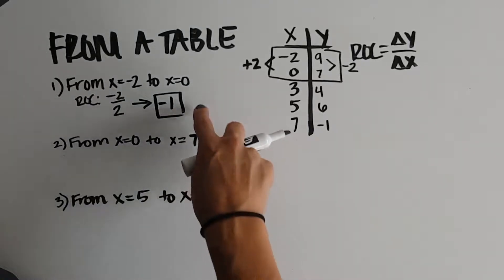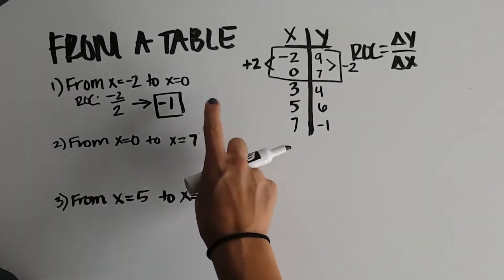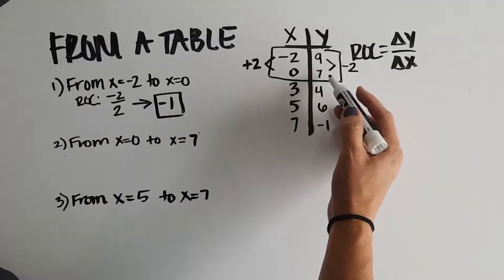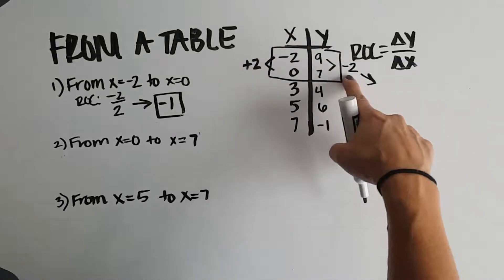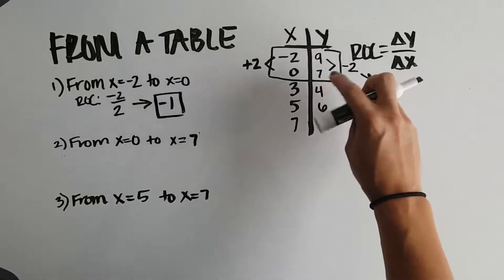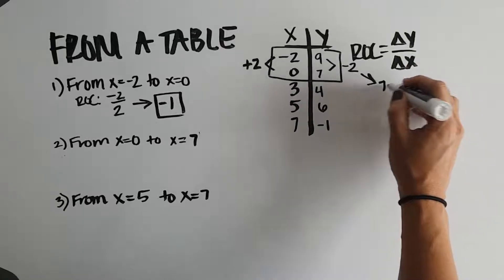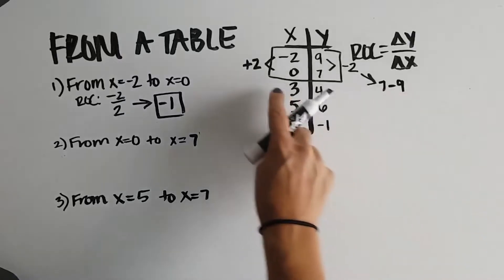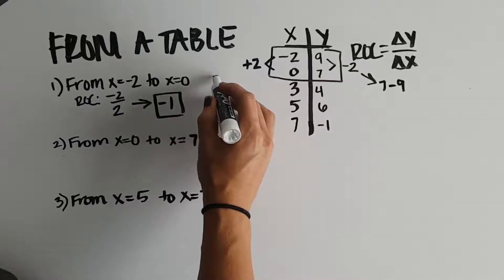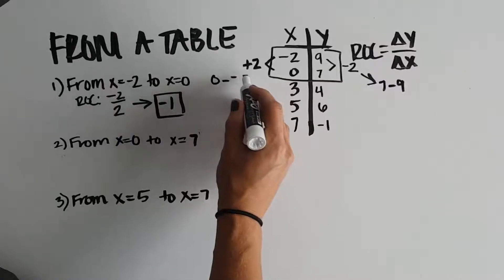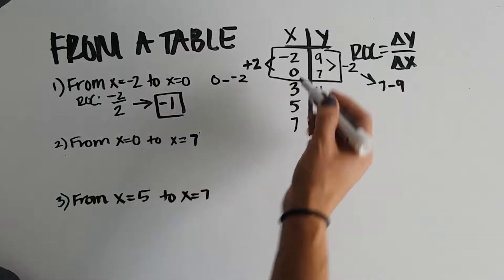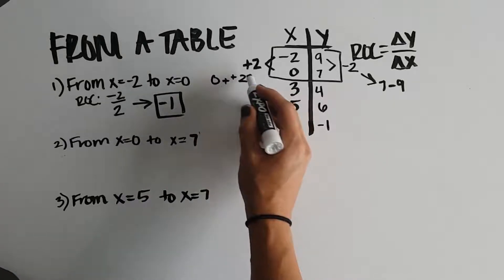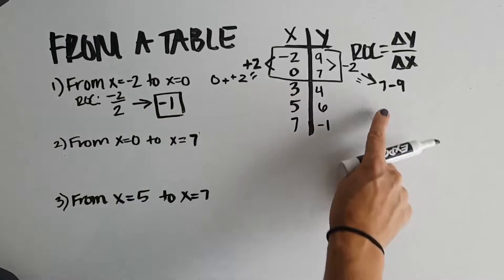That means y is going down by 1 every time x goes up by 1. The way we get negative 2 is by taking our second y-value, 7, and subtracting our first y-value, 9: 7 minus 9 is negative 2. Same thing for x: we take our second value, 0, and subtract negative 2, because we're finding the difference between those two values. 0 minus negative 2 is positive 2. That's how we end up with these values.